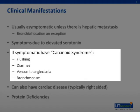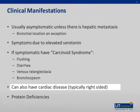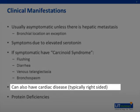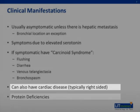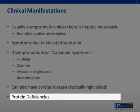Carcinoid syndrome is a constellation of symptoms present in a symptomatic patient and includes flushing, diarrhea, venous telangiectasia, and bronchospasm. Other disease processes associated with carcinoid include right-sided heart disease and protein deficiencies.